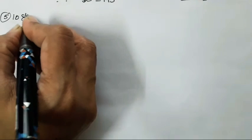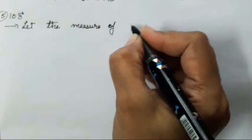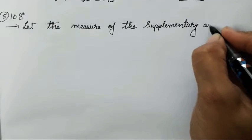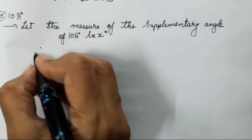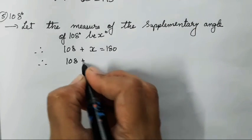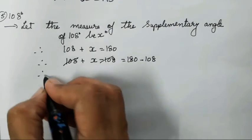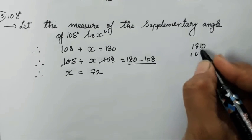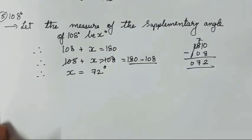The fifth one is 108 degrees. So let the measure of the supplementary angle of 108 degrees be x degrees. Therefore 108 plus x equals 180. Therefore 108 plus x minus 108 equals 180 minus 108. So x equals 72. Again I will show you the subtraction. So 72 is the supplement of 108.